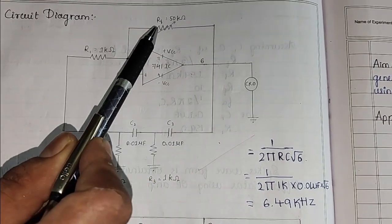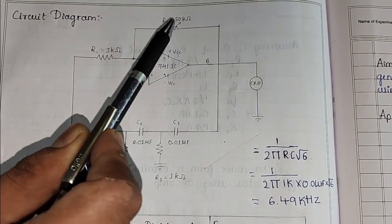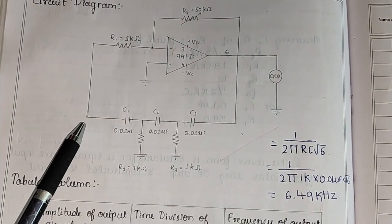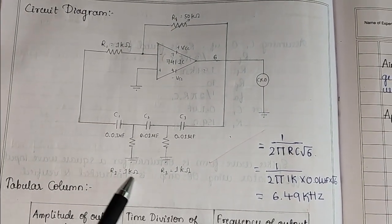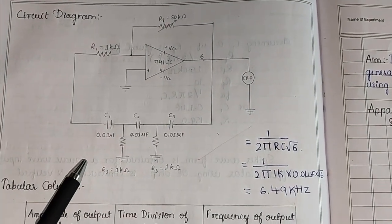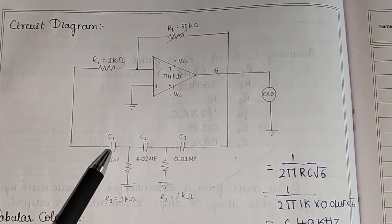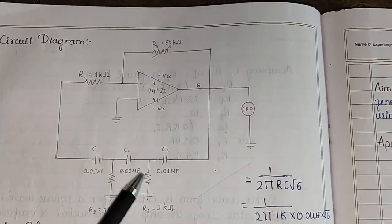It is 50K, here we use DRB that is decade resistance box. With the feedback resistor we also use the tank circuit which is consisting of six components: three capacitors and three resistors.